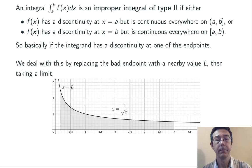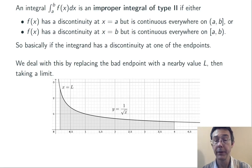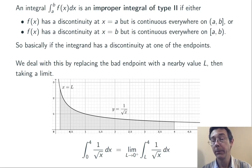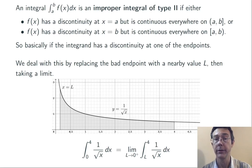As in the example we're working on right now, the idea is simple. Replace the bad endpoint with a nearby value L, so that you miss the discontinuity — so that the vertical asymptote is not part of the interval you're integrating over. Then take a limit. In the problem we're working on, where we have y equals 1 over the square root of x from 0 to 4, we're instead going to do a definite integral from L to 4, where L is just a little bit bigger than 0. We always want L to be greater than 0.